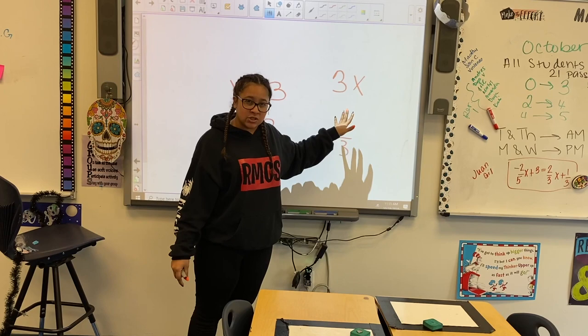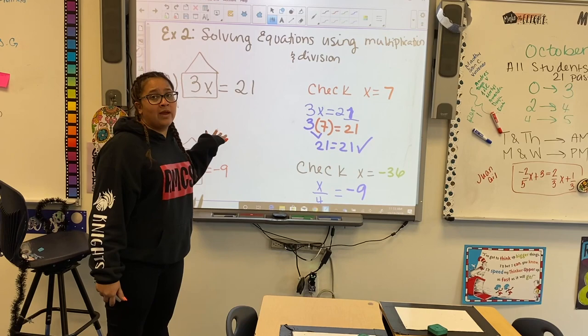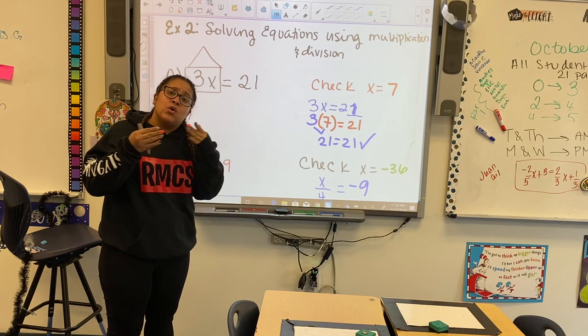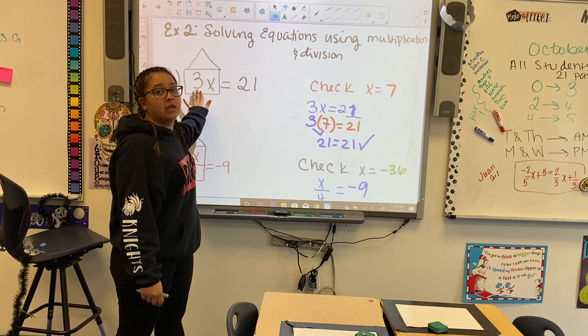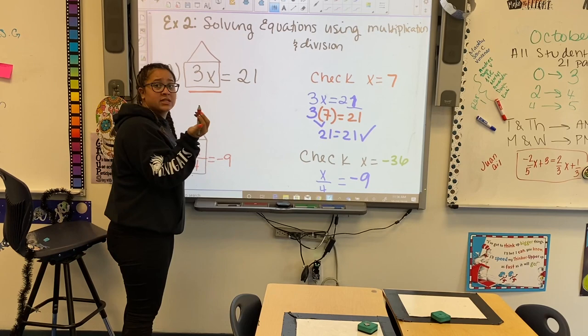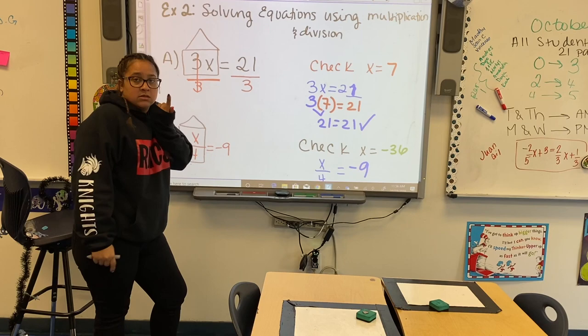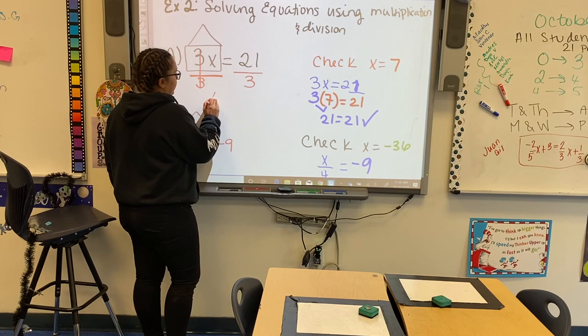3x equals 21. Whose house is it? It's x's house. Who do we have to get rid of? The 3. How? Inverse operation — the opposite. The 3 is multiplying x, so our opposite is division. We put a division bar and divide by 3 on both sides so we can cancel it out. Because 3 divided by 3 is 1, and 1x is just x, x is by himself. We get x equals 7.